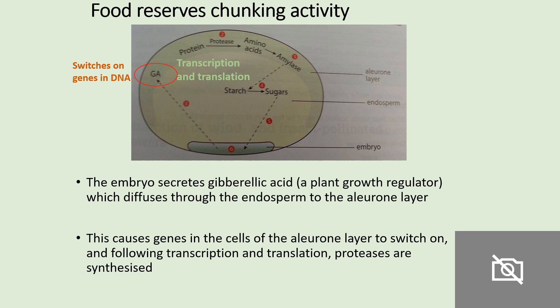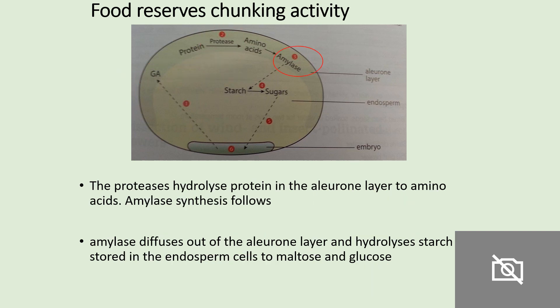Gibberellic acid causes genes in the cells of the aleurone layer to switch on, and following this they transcribe and translate proteases. The gibberellic acid is switching on genes that synthesise proteases. The proteases hydrolyse the protein in the aleurone layer into amino acids.